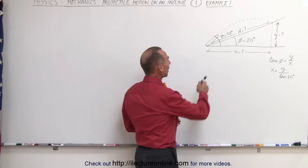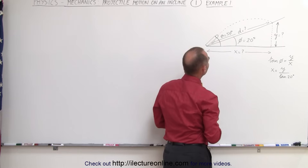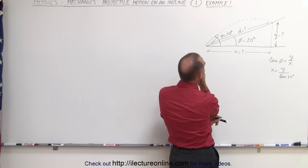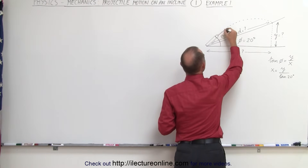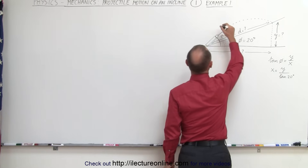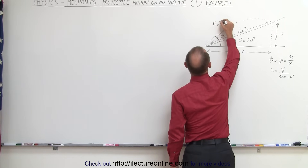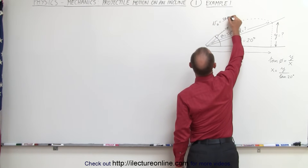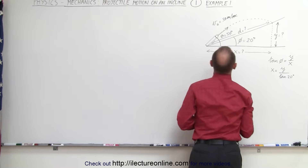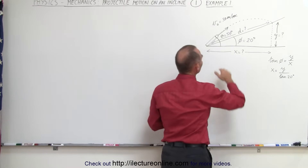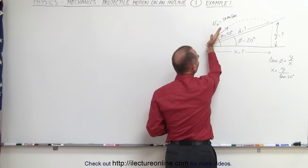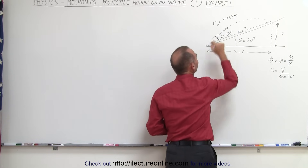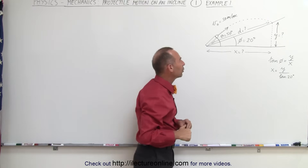The first example is an object being fired out, and we need some initial velocity. Let's make that v-initial equal to 30 meters per second. The incline has an angle of 20 degrees relative to the horizontal, and the projectile is being fired at an angle of 50 degrees relative to the horizontal.